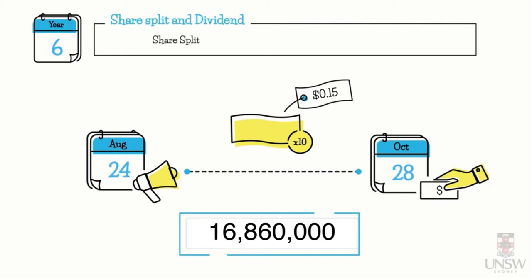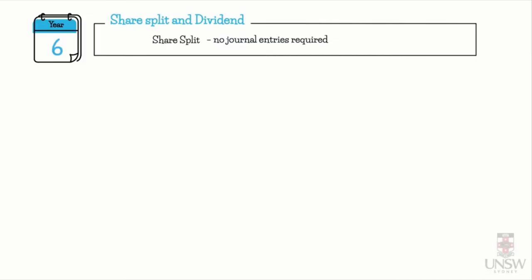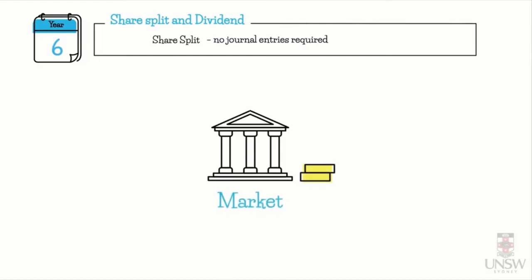Share splits do not result in any journal entry because they don't change the balance — they simply divide the same amount of share capital into smaller portions. On the market, this is reflected as a decrease in the market price per share, but it increases the number of shares that can be actively traded. So no journal entry for the share split.